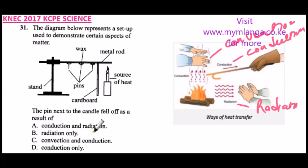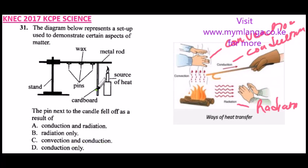Looking at the answer: the pin next to the candle fell off as a result of — option A says conduction and radiation. We don't have radiation here because there is a cardboard separating the source of fire from the pins. Radiation only — that's not right either. Convection and radiation — since the cardboard separates the pins from the candle, that won't work. So D — conduction only — is correct, because heat is transferred through the metal rod. That is the correct answer.